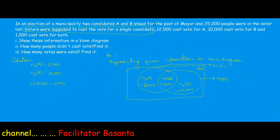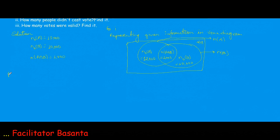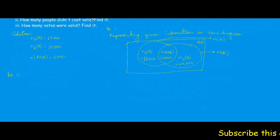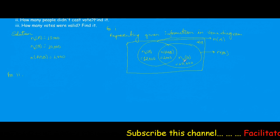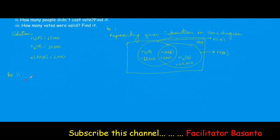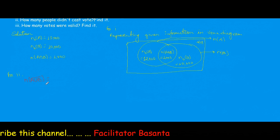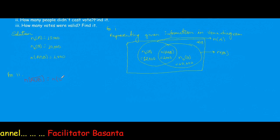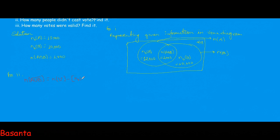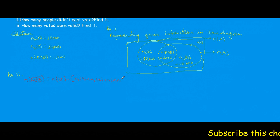For the second part, we need to find how many people did not cast vote. The number of people who did not cast vote is N(A union B) complement, which equals N(U) minus the quantity N(only A) plus N(only B) plus N(A intersection B).